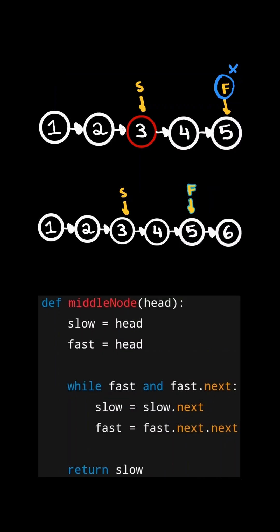Coming back to the second example, we move the fast pointer by two steps and the slow pointer by one step. Now notice the fast pointer is null, so we stop the algorithm and return the node at the slow pointer.